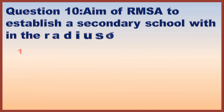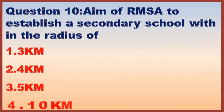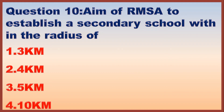Question 10. What is the aim of RMSA to establish a secondary school within a radius of? Correct answer is option 3: 5 kilometers.